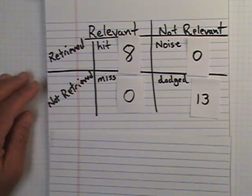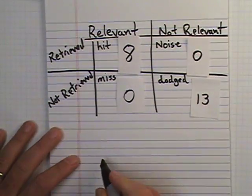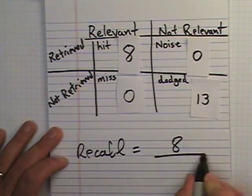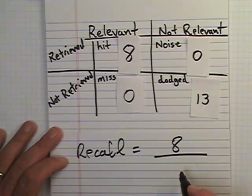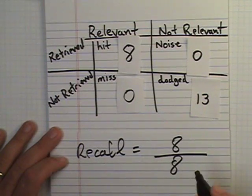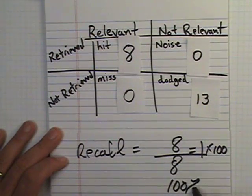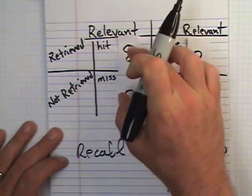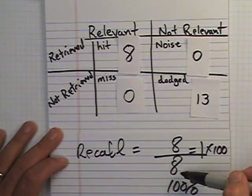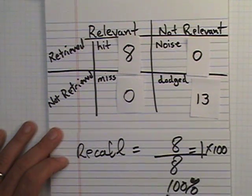So here, recall equals the total relevant retrieved over the total relevant in the system. So relevant retrieved is eight, there are eight total. That equals one, times 100, gives you 100% recall. Recall in this setting is hits over the total relevance, eight over total relevant eight is one times 100 to get your percentage. So in this case, recall was 100%.